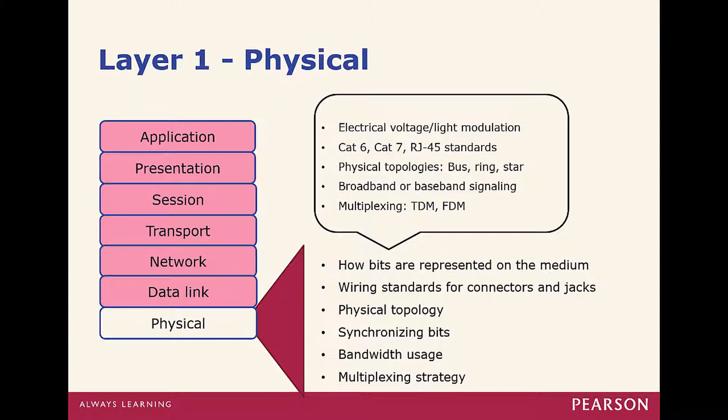Layer 1 is Physical. The characteristics here are the bits that represent the media — it could be electronic or electrical, it could be light, or it could be a radio wave. We look at different characteristics like topology and multiplexing — time division multiplexing versus frequency division multiplexing — which is essentially how to put that signal on the wire, whether that wire is copper, fiber, or wireless.